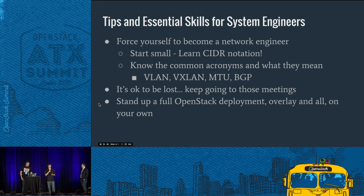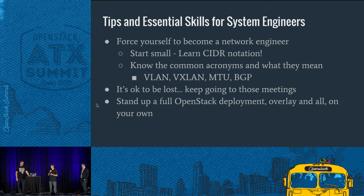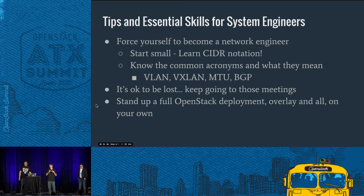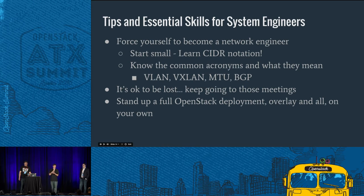That may seem trivial, but to a network engineer, when you speak in those terms, it automatically lets them know you have an idea of what you're talking about, and they're going to want to help you more. The next part: anybody who has talked to a network engineer for more than 30 minutes knows that every other word is typically an acronym. You don't have to know every single one, but you do have to know the common ones you'll be using in your overlay environment. Key ones I use almost daily: VLAN for isolation in your underlay, VXLAN for encapsulating traffic across the VLAN, MTU sizes impacted by VXLAN encapsulation, and routing protocols like BGP to route traffic outside your OpenStack network.